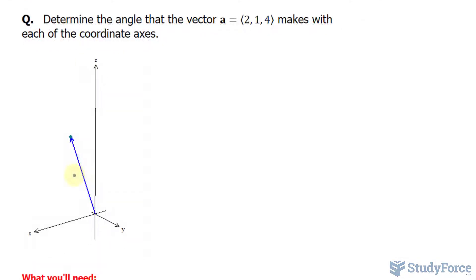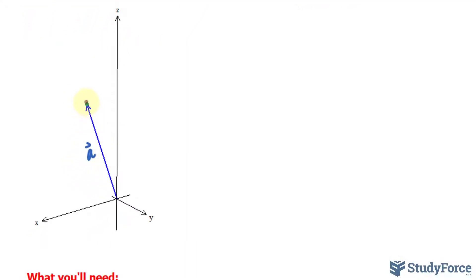So again, for reference, this is vector a. The very first thing I want to do is assign letters representing the angles of this vector relative to the three axes. I'll call the angle between this vector and the x-axis alpha, although you can use any letter you like. The angle between the vector and the y-axis is beta, and the angle between the vector and the z-axis is gamma.